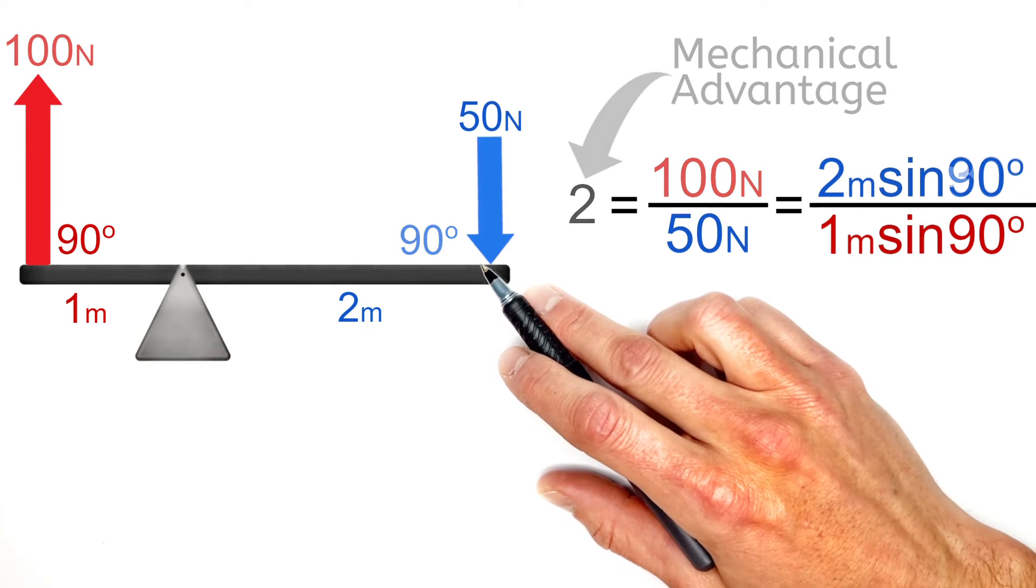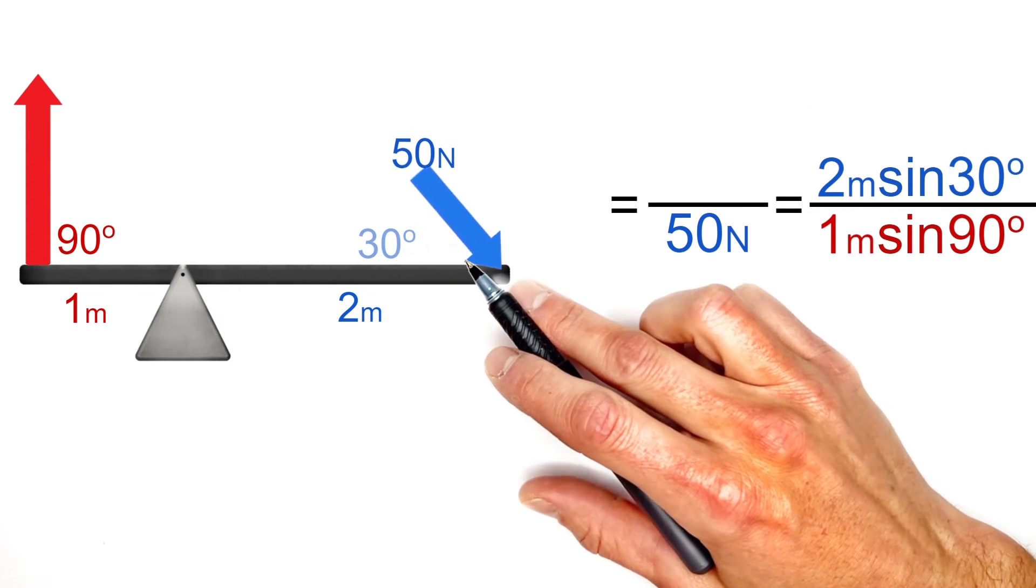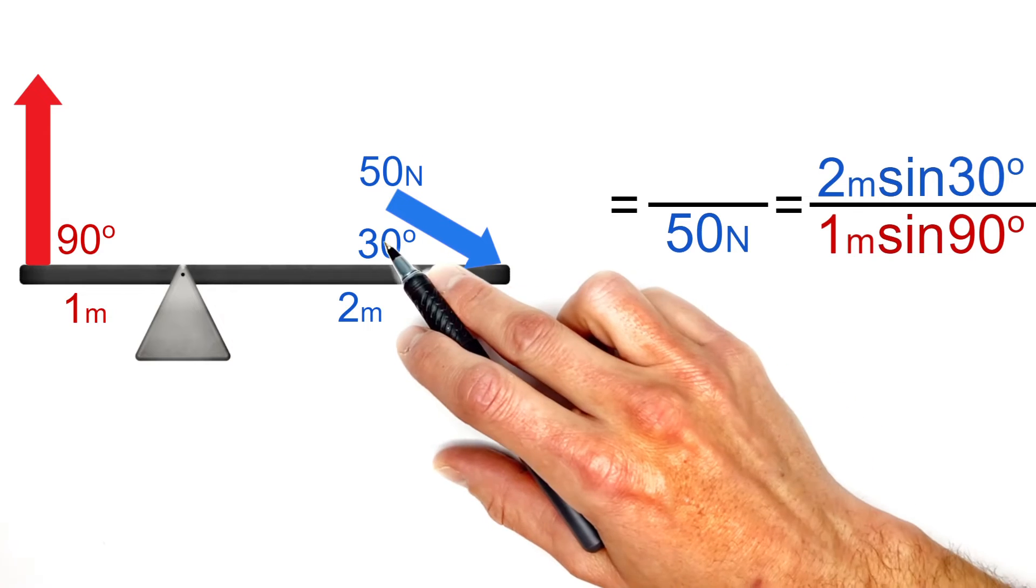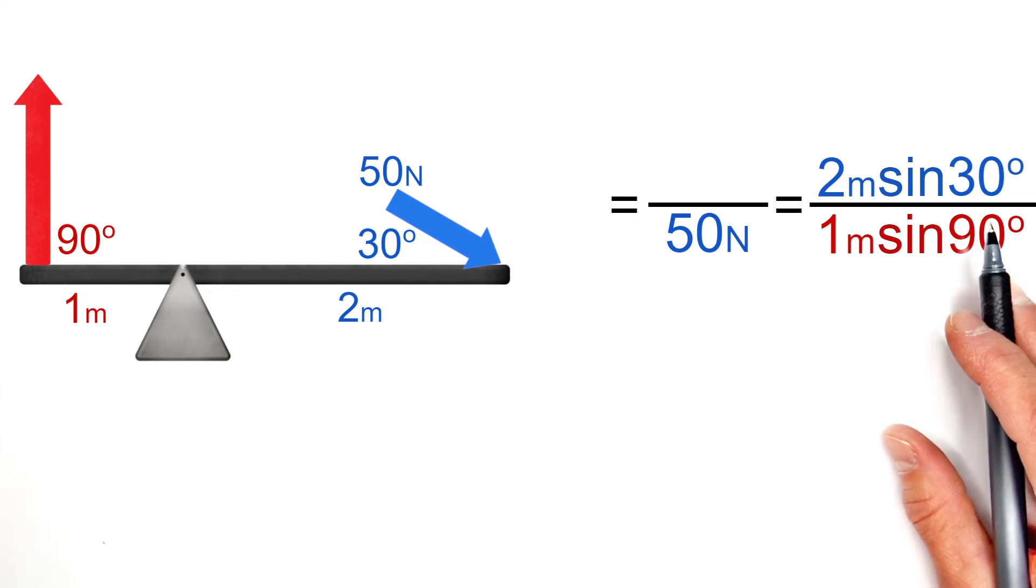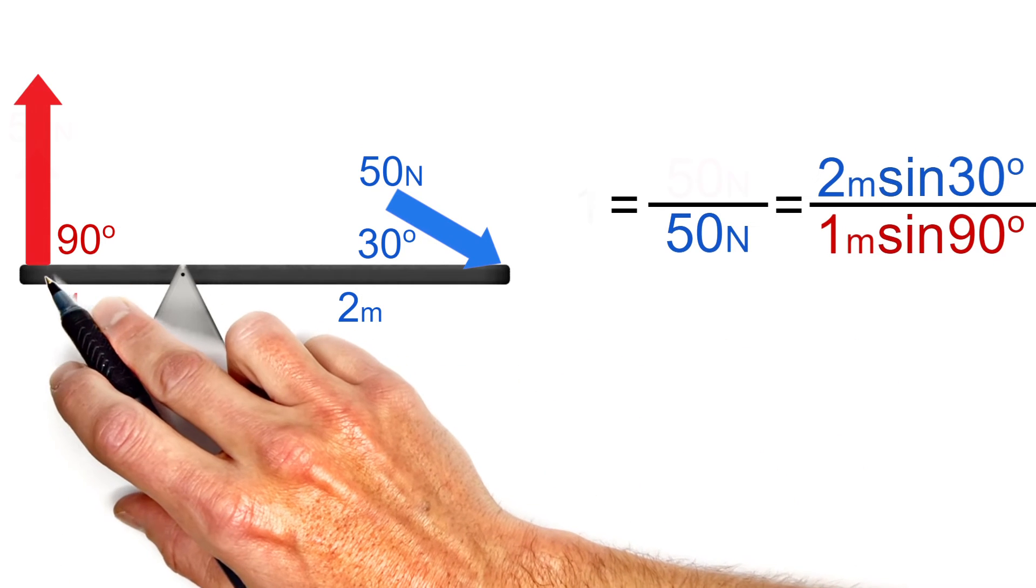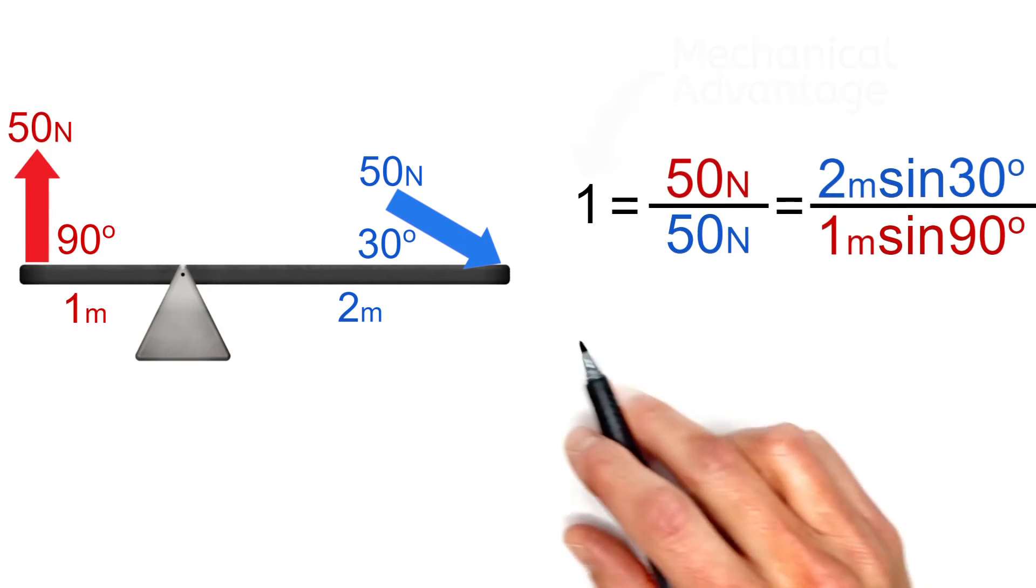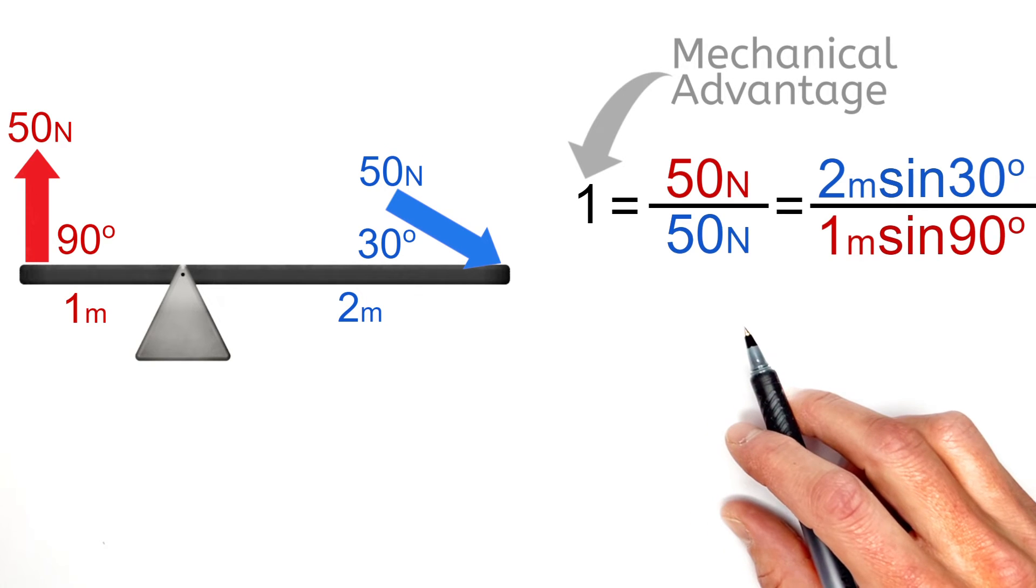So if we change the direction of this input force to, how about, just 30 degrees between the lever and the force, our input angle over here is going to change to 30 degrees, meaning the output force is going to drop to 50 newtons, and our mechanical advantage drops to just 1.